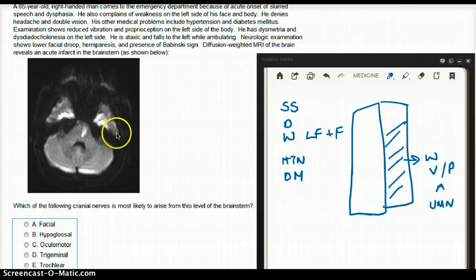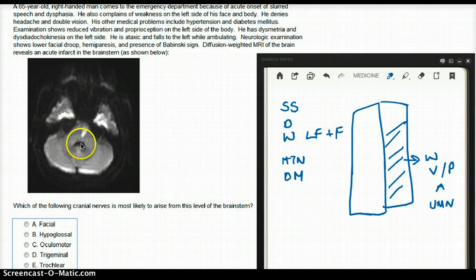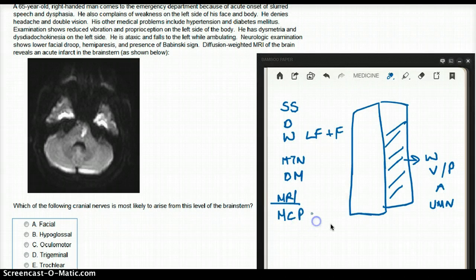But what exactly are we looking at? We are looking at the middle cerebellar peduncle and areas around the middle cerebellar peduncle. So we know that from the MRI, there is middle cerebellar peduncle damage.